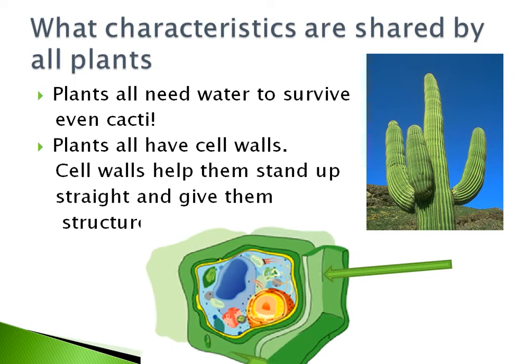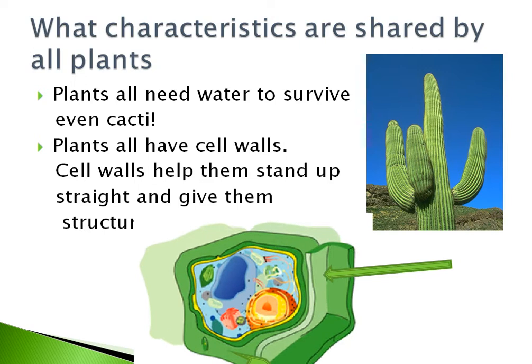Plants also have cell walls because they do not have a skeleton. The cell wall is basically what makes them stand up straight. Here is a picture of a plant cell, and the green shell surrounding it is basically the cell wall.